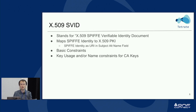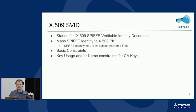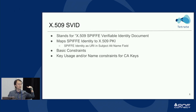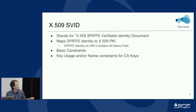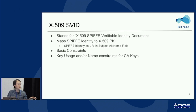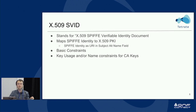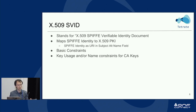The SVID has some basic constraints, like limits on URI length. The identity goes in the SAN field, not in the common name or other fields. It also has key usage constraints — root CA and intermediate CA should use the key signing key usage. A name constraint for CA keys is also defined, though it's a nice-to-have right now since X509 PKI implementations don't have good support for URI name constraints, only for domain names.